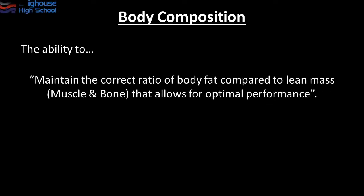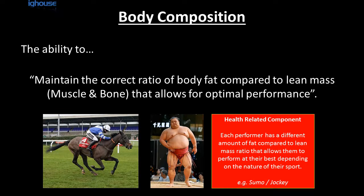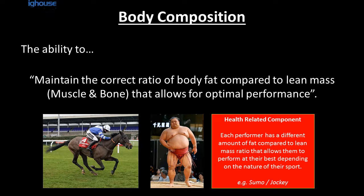Body composition is probably a new one for most of you. It is the ability to maintain the correct ratio of body fat compared to lean mass — lean mass being muscle and bone, anything that's not body fat — that allows for optimal performance. Using the examples of the jockey and sumo wrestler, each performer has a different fat-to-lean-mass ratio, and each has an optimal body composition. A sumo wrestler clearly needs a higher ratio of body fat compared to the jockey, because it allows him to perform at his best in his event.